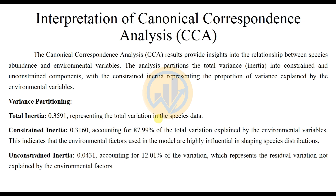Continuing with the interpretation of Canonical Correspondence Analysis. The Canonical Correspondence Analysis results provide insight into the relationship between the species, habitats, and environmental variables. The analysis partitions the total variation into constrained and unconstrained components, where the constrained component represents the proportion of variation explained by the environmental variables.